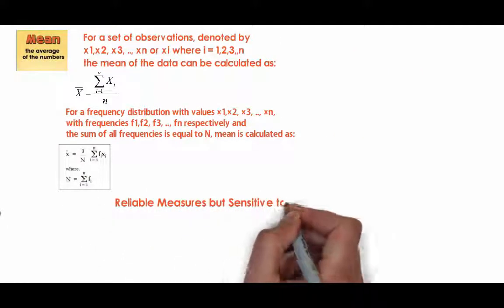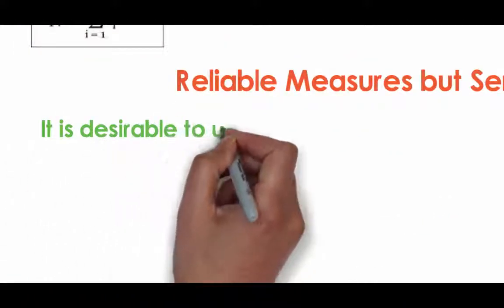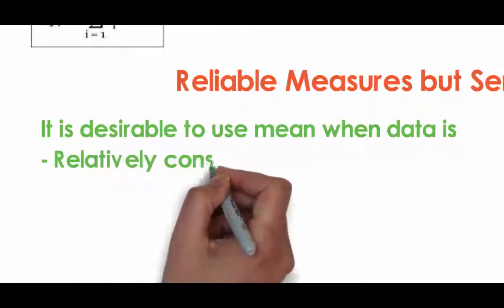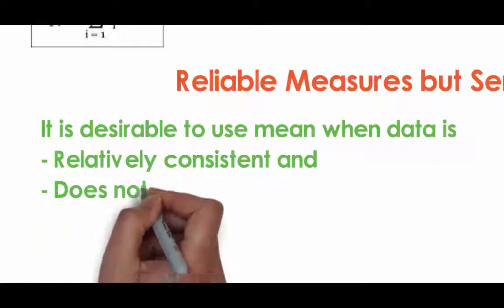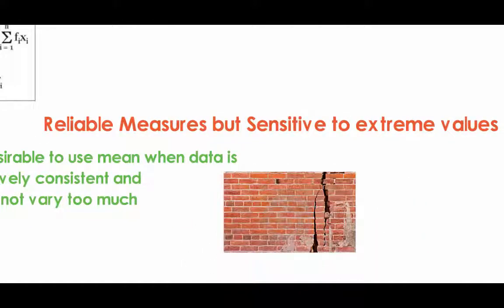It is one of the most reliable measures as it takes into account the whole set of data. It is however sensitive to the extreme values present in the data set. It is thus desirable to use mean when data is relatively consistent and does not vary too much. This is why it is not considered to be a resistant measure.